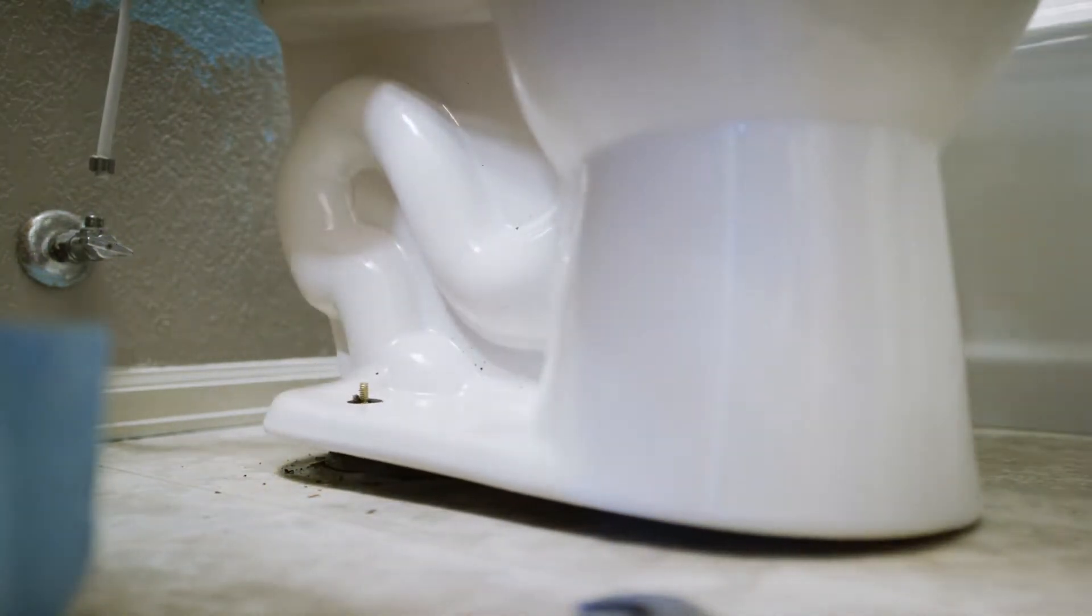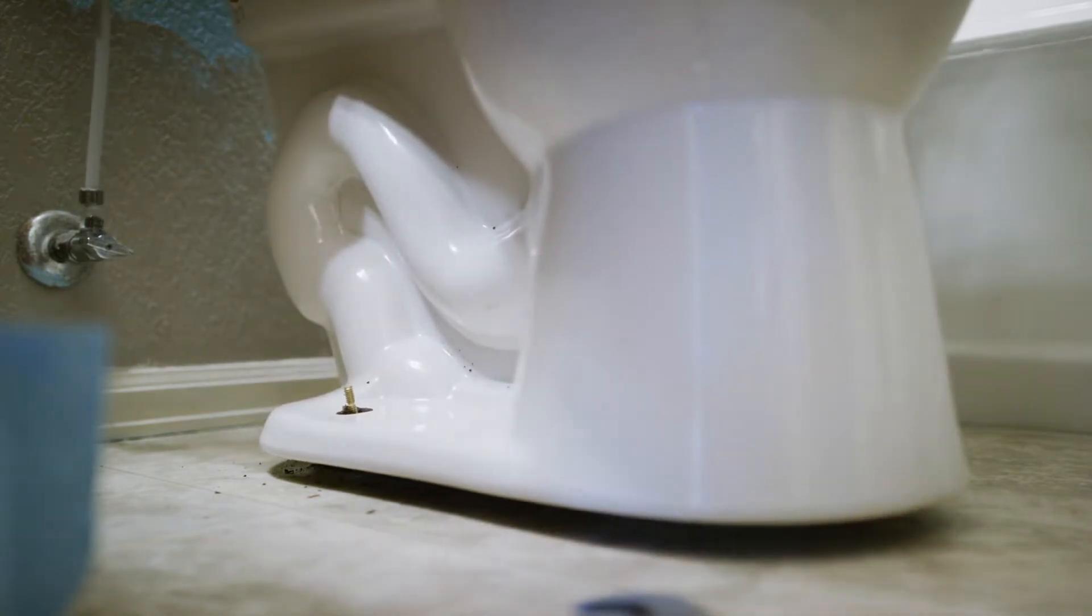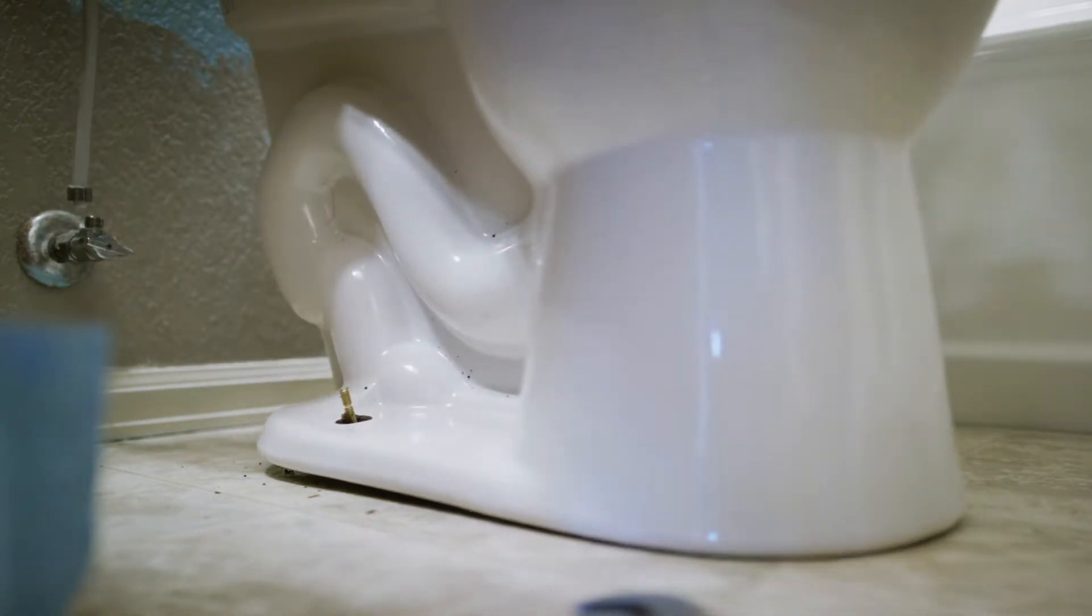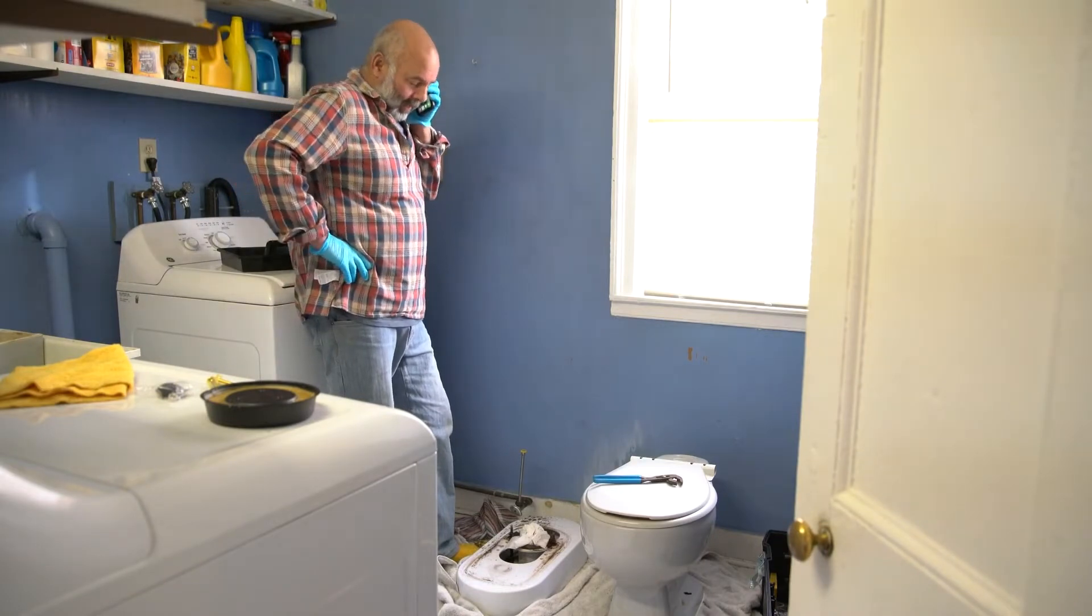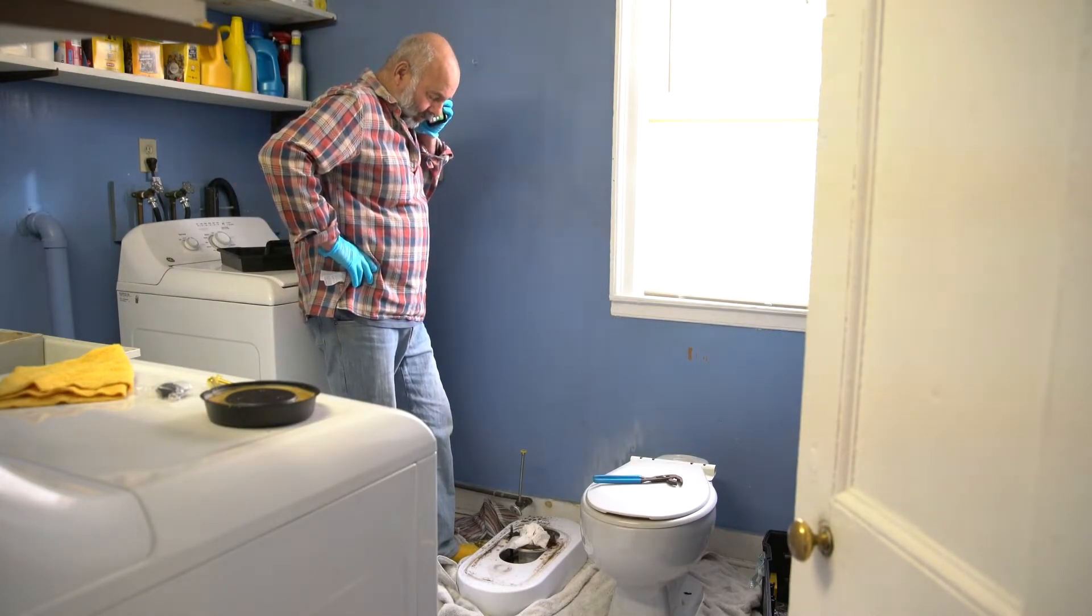This could be through human error or miscommunication. Builders and homeowners can also decide to change the flooring and not relay this to the plumber that installed the toilet, leaving an undesired height on the flange in the home that is finished.